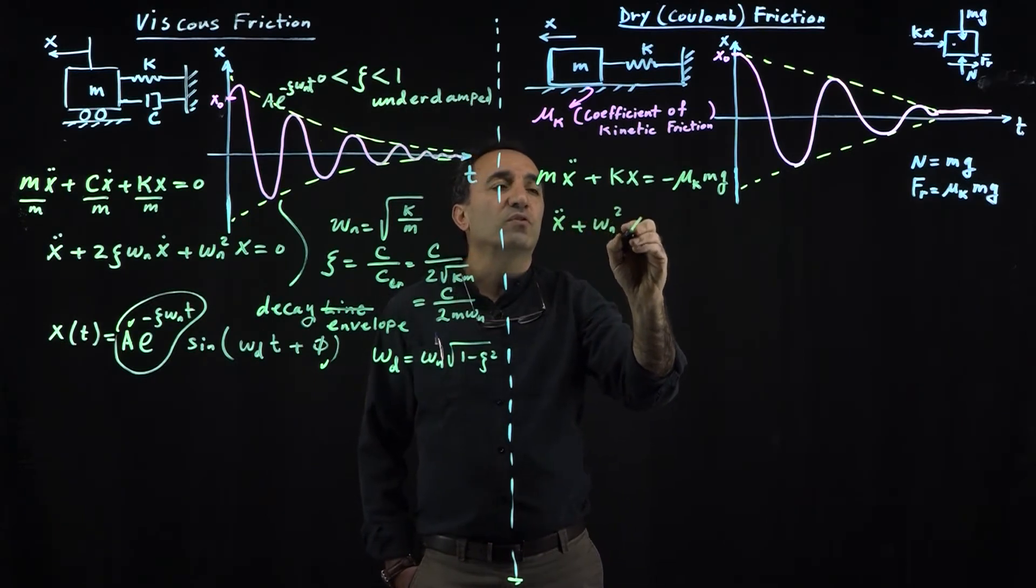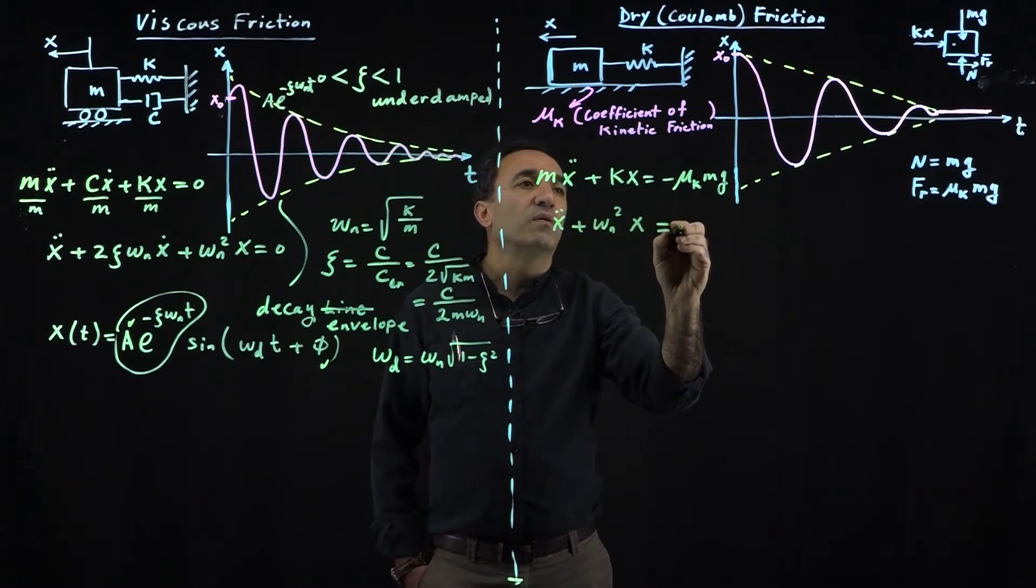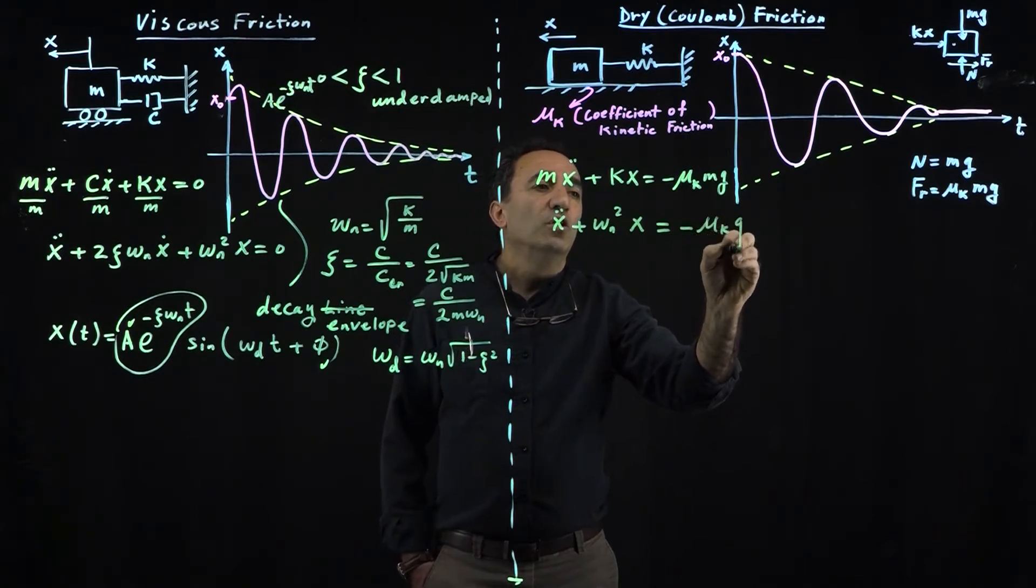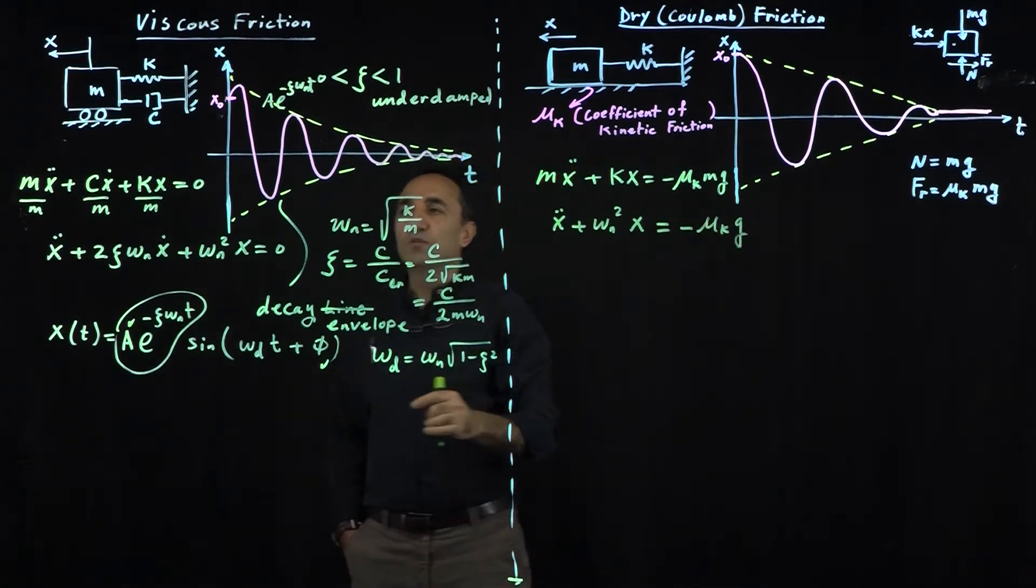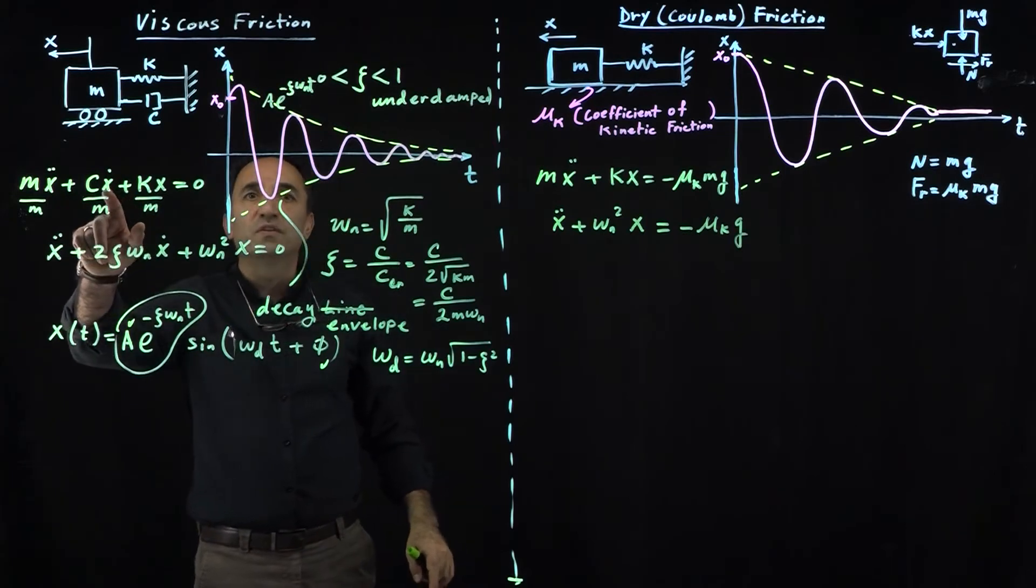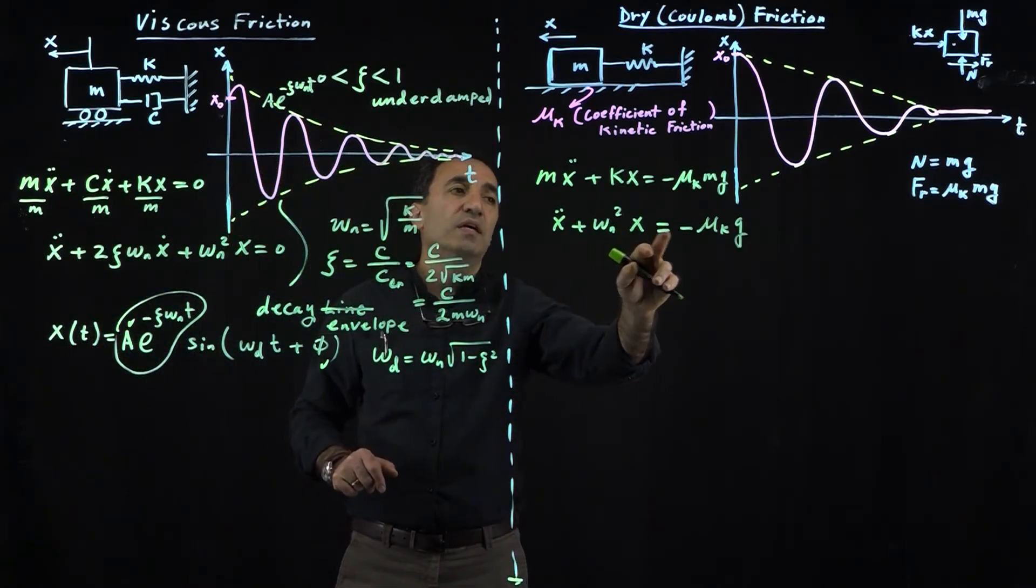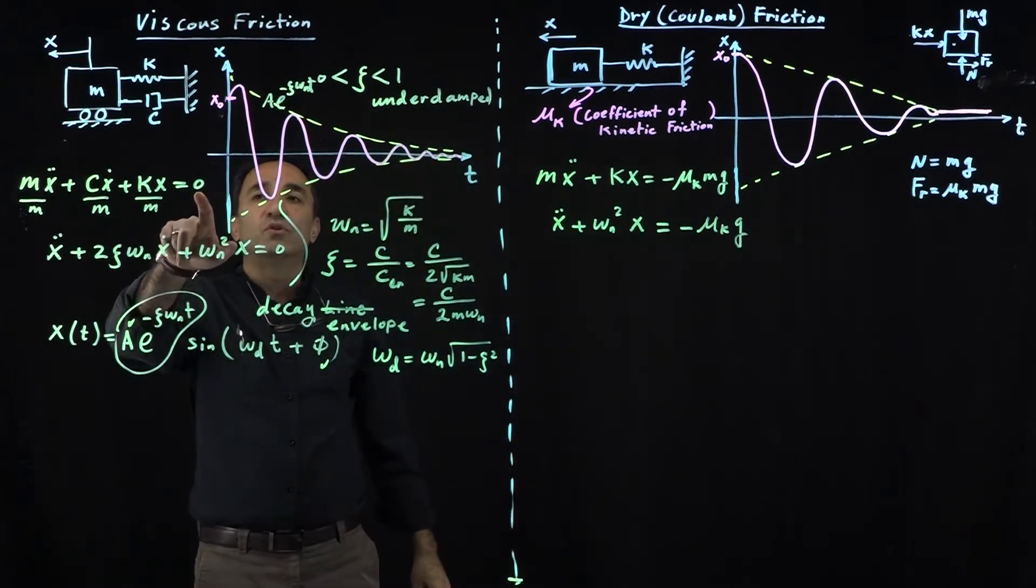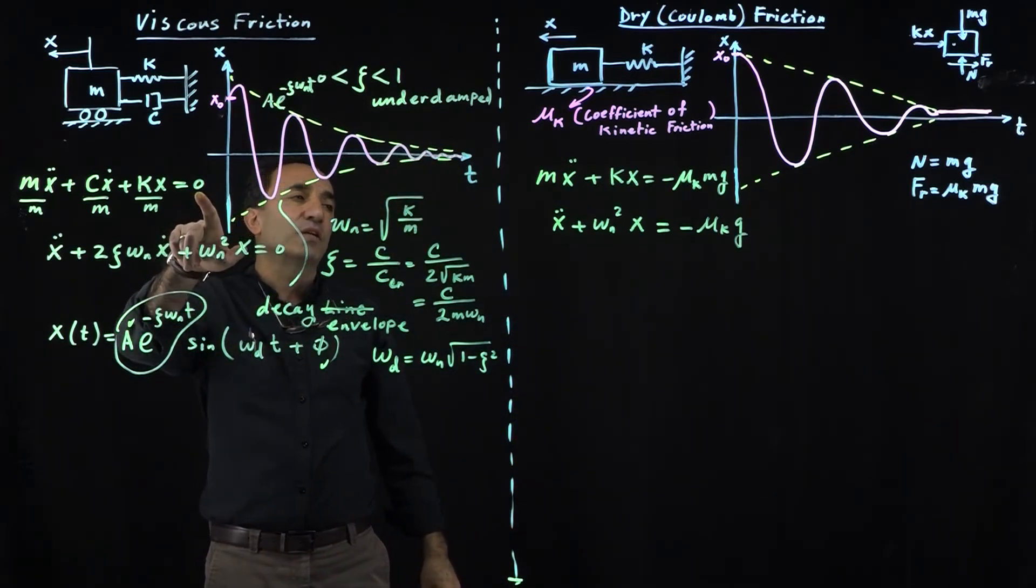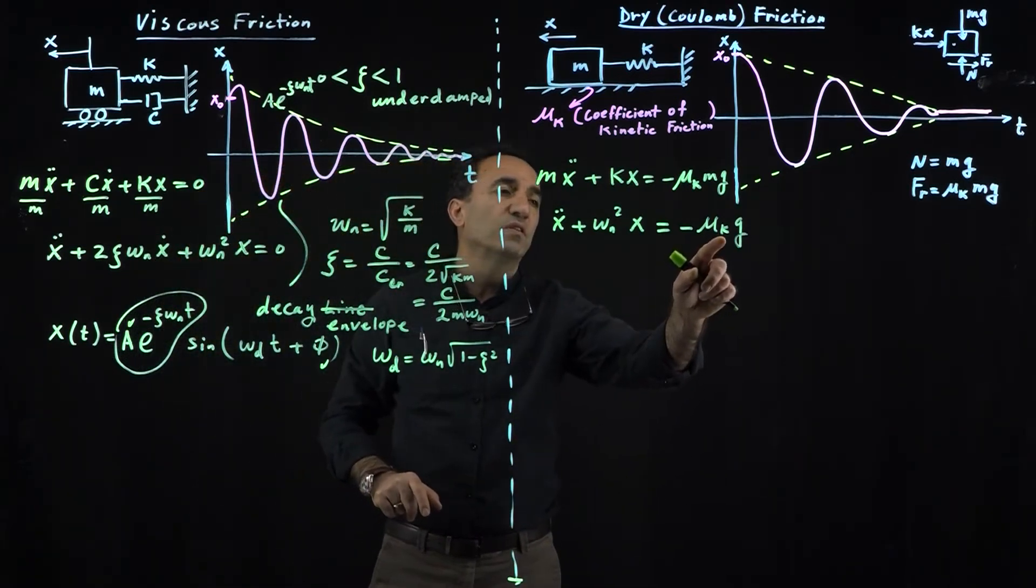If you normalize this, you again see this natural frequency here, and then this becomes minus mu_k times g. Notice there is a big difference between the two systems. Here you have a first derivative. You don't have a first derivative here. This system is homogeneous, meaning the right-hand side is zero. This system is non-homogeneous.